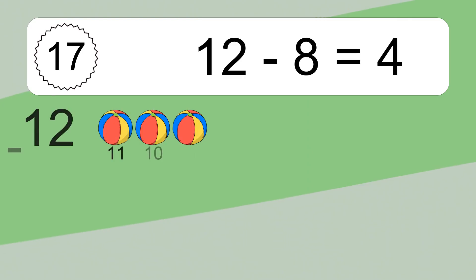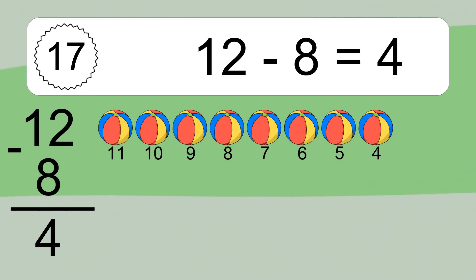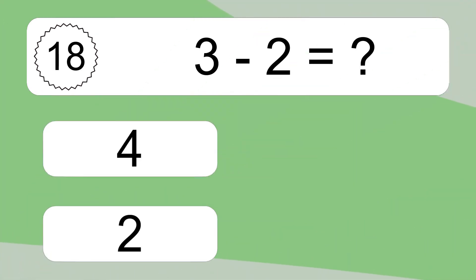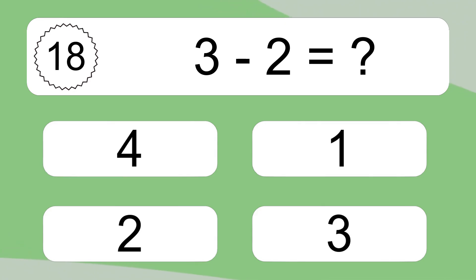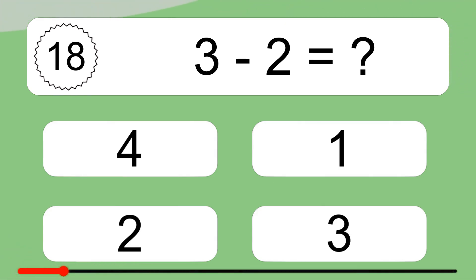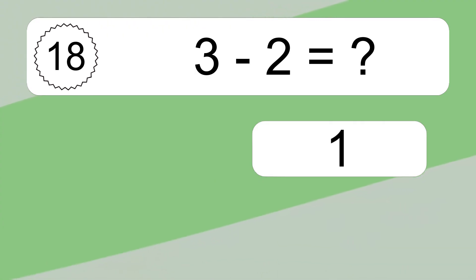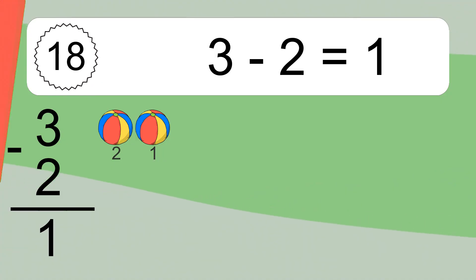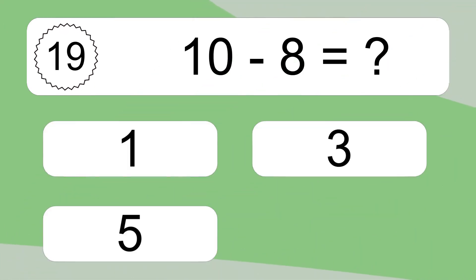16 minus 15 equals 1. Let's count it: 15, 14, 13, 12, 11, 10, 9, 8, 7, 6, 5, 4, 3, 2, 1. 12 minus 8 equals what? 12 minus 8 equals 4. Let's count it: 11, 10, 9, 8, 7, 6, 5, 4. 3 minus 2 equals what?